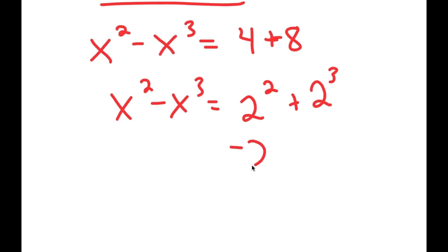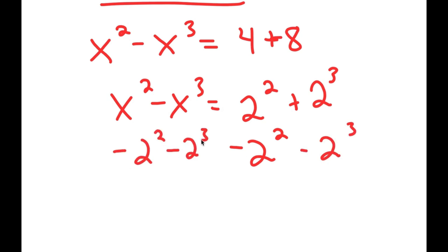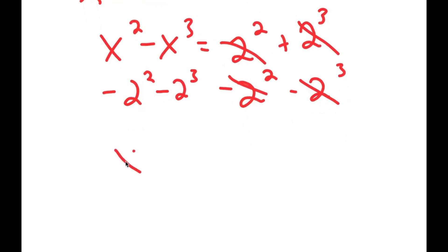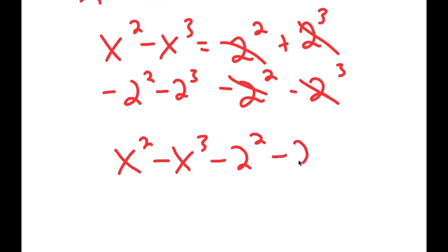Now, I'm going to subtract 2 squared on both sides and 2 to the power of 3 on both sides. So then these two cancel out, these two cancel out, and I get x squared minus x to the power of 3 minus 2 squared minus 2 to the power of 3 is equal to 0.